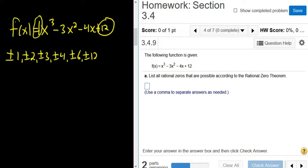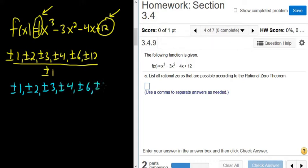And the factors of the first one are just 1. It's always factors of the last one, or the constant term, over factors of the leading coefficient. And if you work this out, if you do 1 over 1, you just get 1. 2 over 1 is 2. 3 over 1 is 3. 4 over 1 is 4. 6 over 1 is 6. And 12 over 1 is 12. So those are the possible rational zeros by the rational zero theorem.